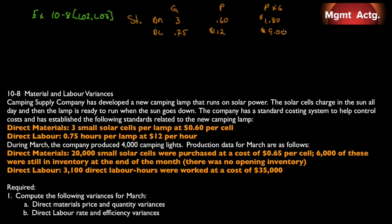During March, the company produced 4,000 camping lamps. So our output was 4,000. Production for March are as follows. Direct materials, here's our actual. Direct materials: 20,000 small solar cells were purchased at a price of $0.65 per cell. 6,000 of these were still in inventory, so only 14,000 were actually used. Direct labor: 3,100 direct labor hours were worked for a total cost of $35,000.